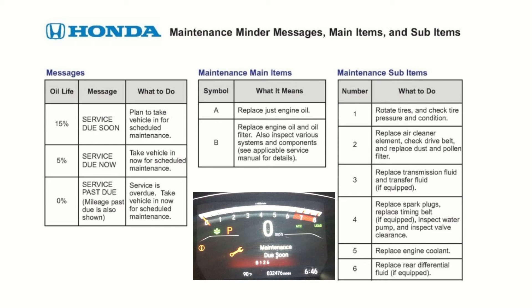So B126 — I have the symbol B. According to the table in the middle, symbol B means replacing engine oil and oil filter, and checking the other components.